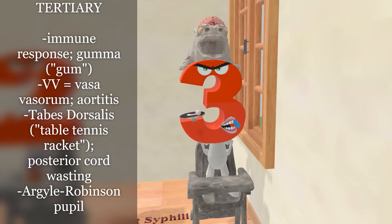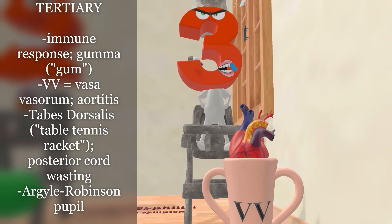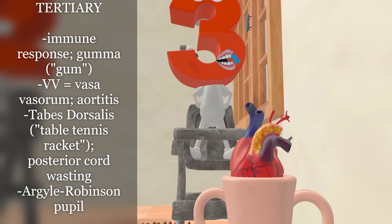In tertiary syphilis there can be lots of organ damage. For cardiovascular syphilis, in front of this son is a vase with 'VV' on it, reminding us of the vasa vasorum. In cardiovascular syphilis there's an endarteritis — inflammation of tiny arterioles, the vasa vasorum — which supply blood to large arteries like the aorta. This can cause aortitis, or inflammation of the aorta, represented by fire on the aorta inside the vase, which can lead to aortic aneurysms.